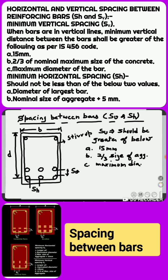Now let us understand minimum horizontal spacing, that is Sh. Should not be less than of the below two values: A) diameter of largest bar, B) nominal size of aggregate plus 5 mm.